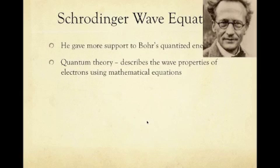Schrödinger gave more support to Bohr in those quantized energy levels and he created the quantum theory, which describes the wave properties of electrons using mathematical equations, and defined electrons as waves.